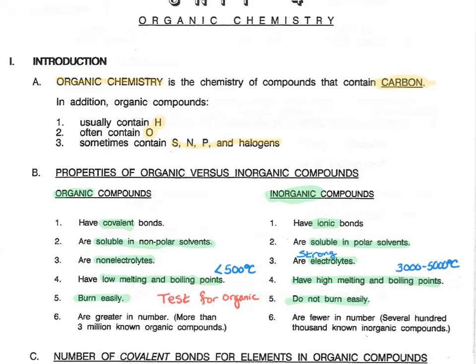And finally, we know that there are far, far more organic compounds — more like 3 million organic compounds — than there are inorganic compounds, which only range in the hundreds of thousands.